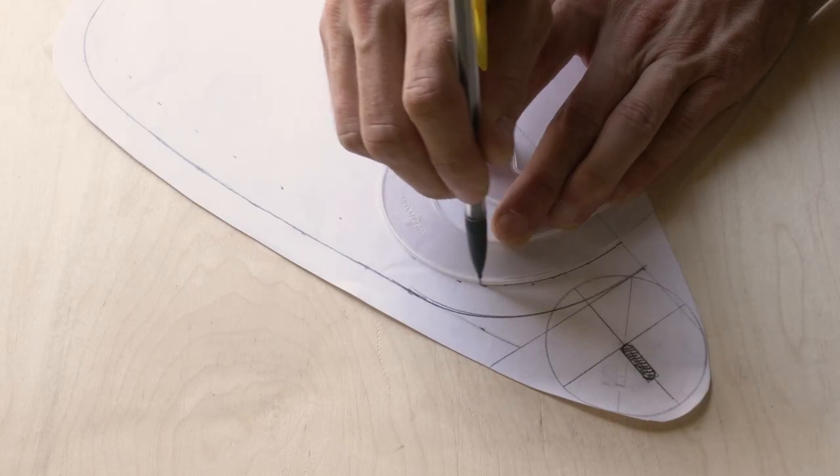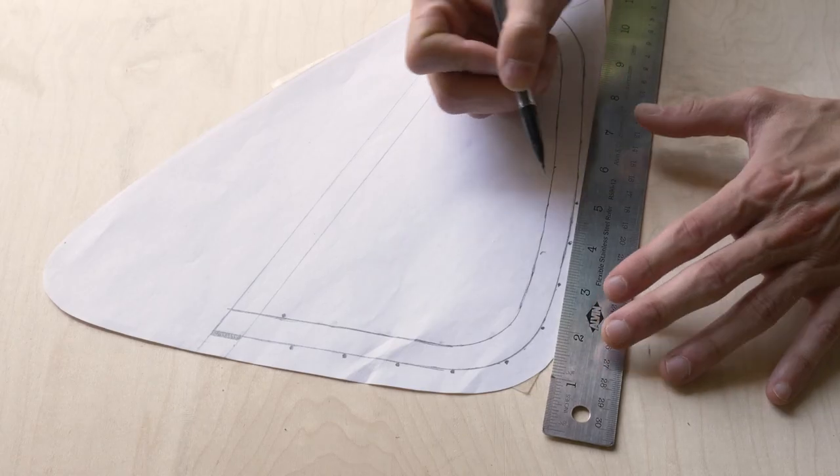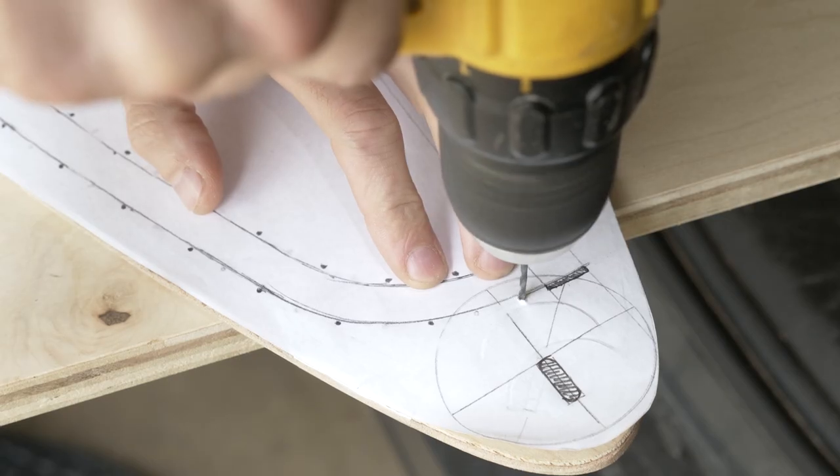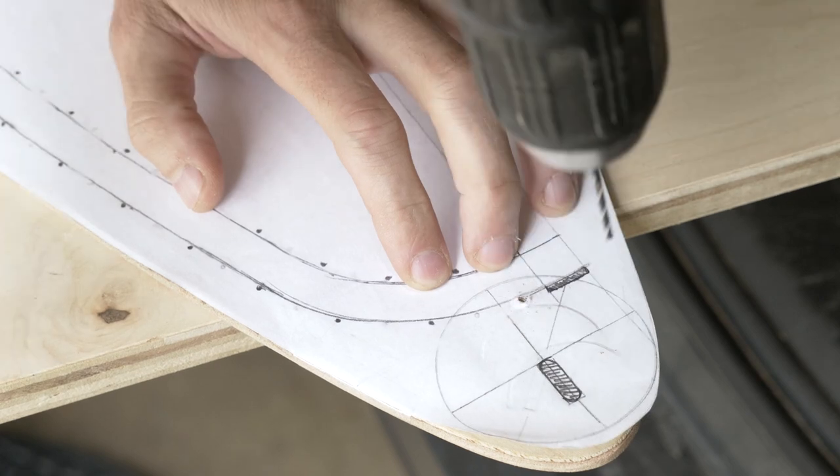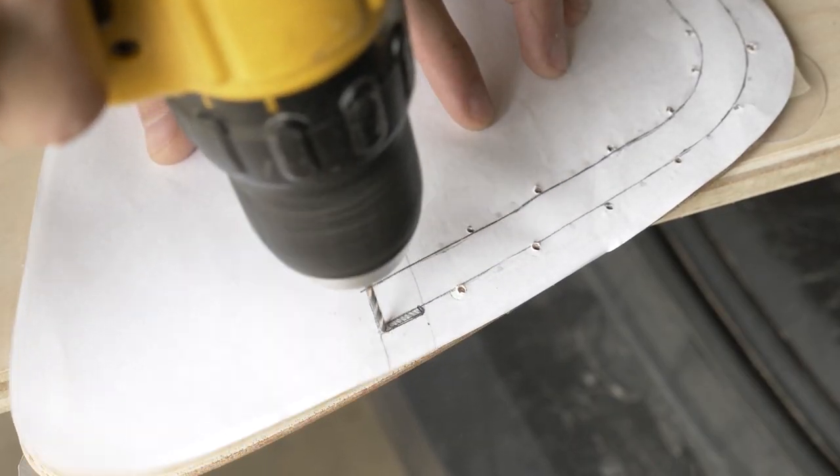I started by drawing the outline of the pouch, then marked where the holes would go that I'll use to attach the pouch to the board. I taped the template onto the board and used it as a guide to drill the holes and two slots that'll feed the elastic edging through.